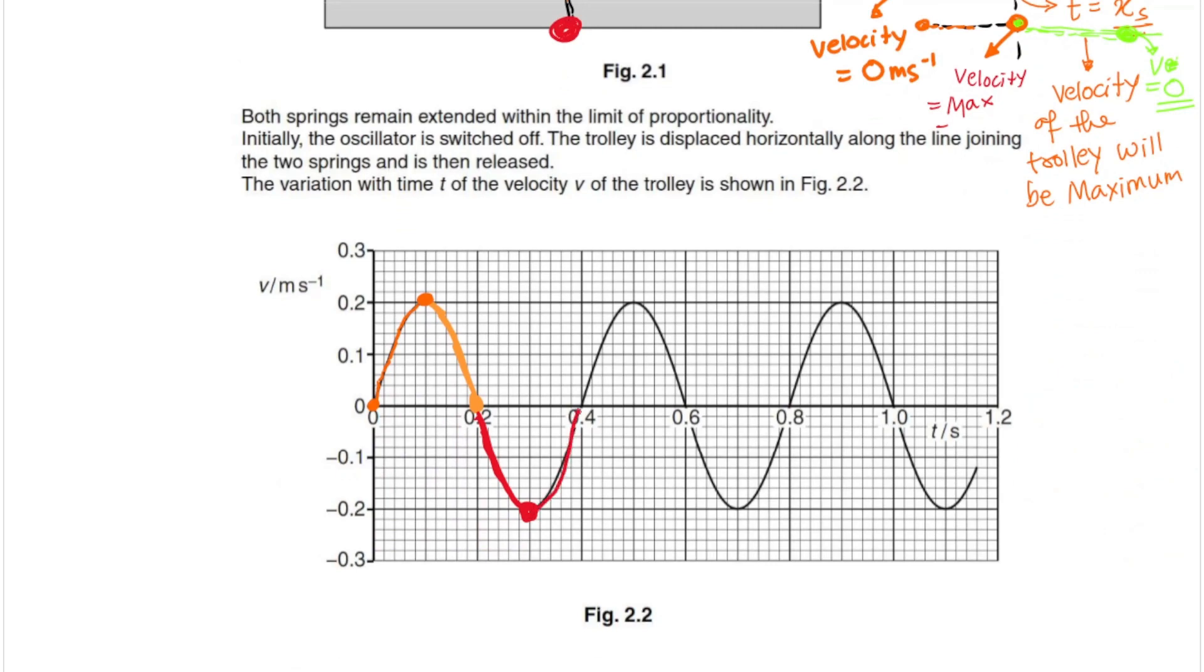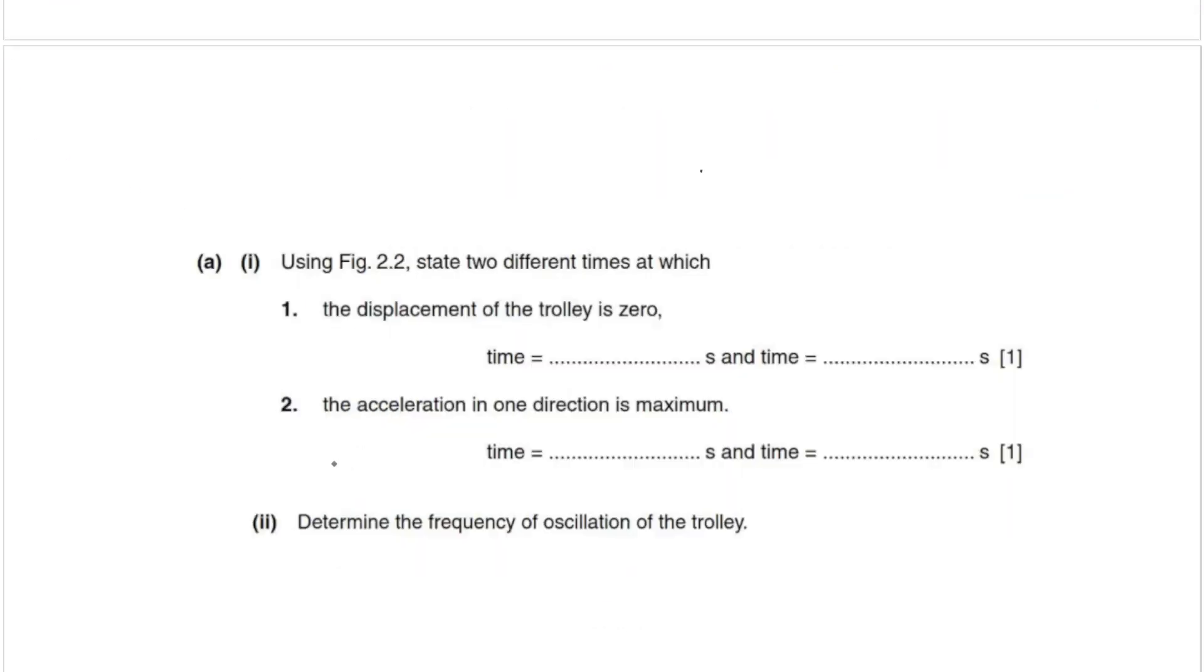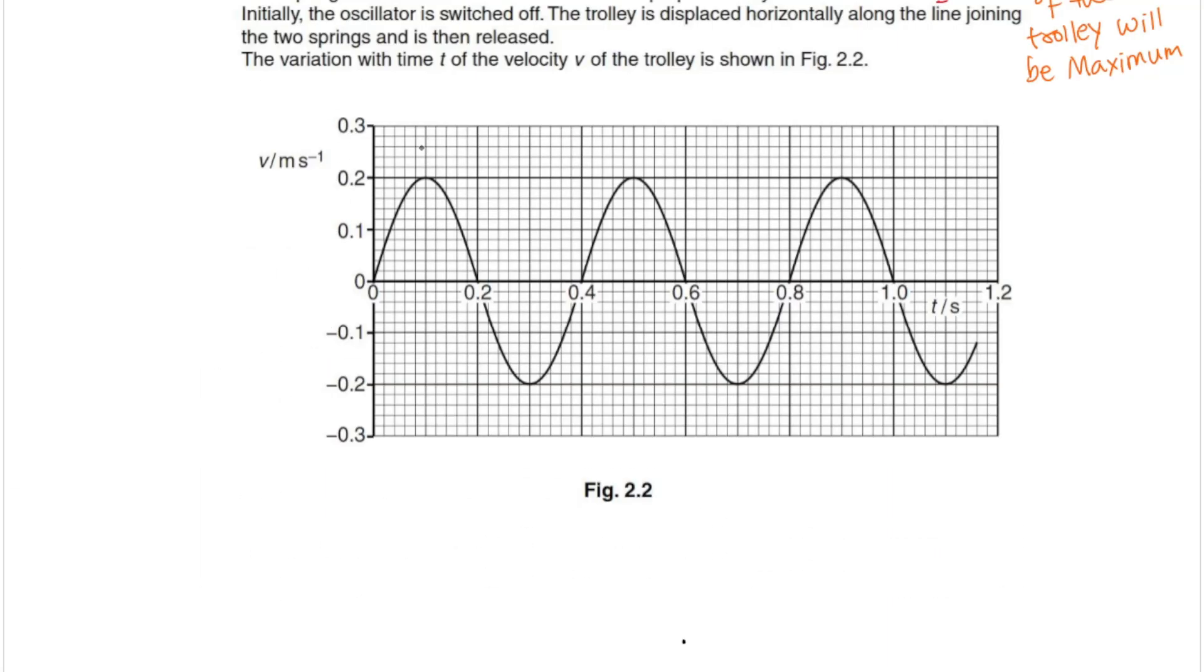Now that we've understood what the graph represents, let's continue with the question. In part A1, we've been asked using figure 2.2, state two different times at which the displacement of the trolley is zero and the acceleration in one direction is maximum. Now how do we determine when and where displacement of the trolley is zero from a velocity-time graph? We know that displacement is calculated as area underneath the graph.